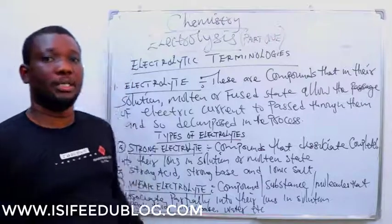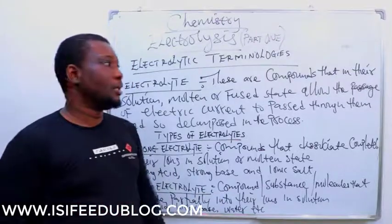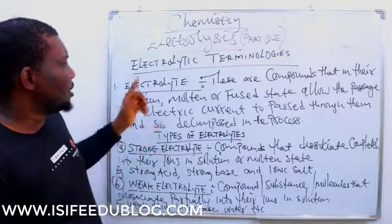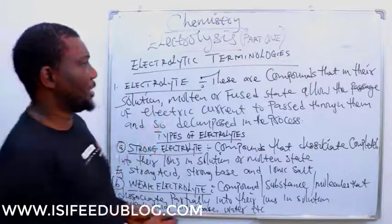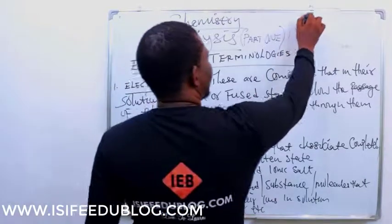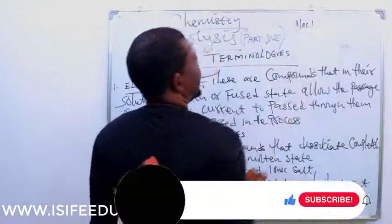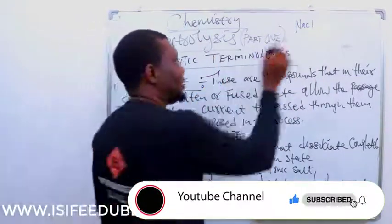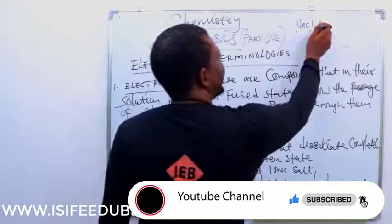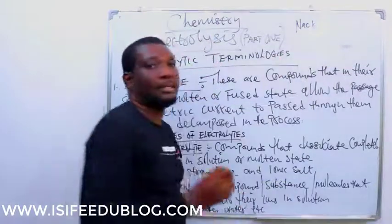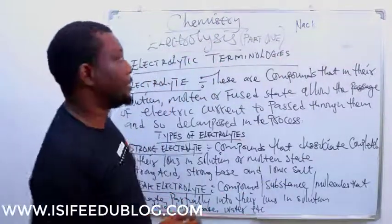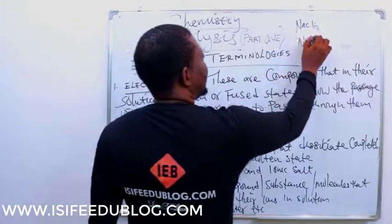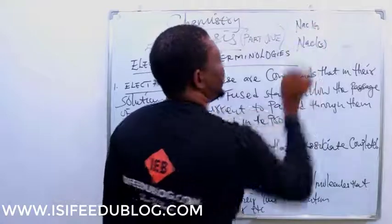Acids, bases, and salts are electrolytes because in solution or aqueous form, these compounds will basically dissociate into ions. For example, an electrolyte will conduct when it is in an aqueous state, but it will not be an electrolyte if the matter state is solid.